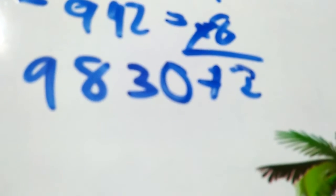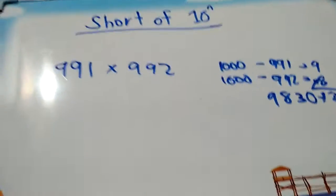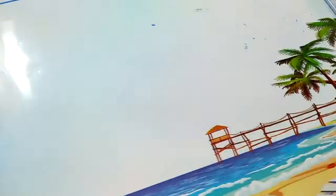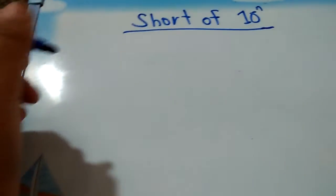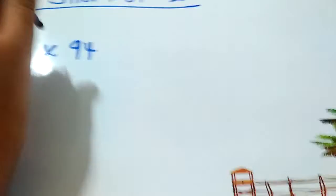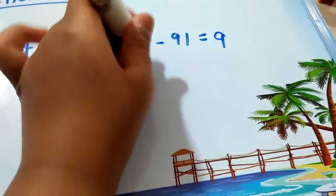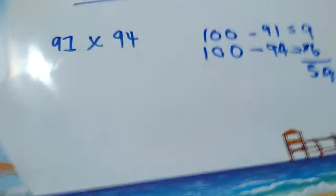How about we do a 2-digit instead of a 3-digit? We need to check 91 times 94. Now we need to do 100 minus 91, that's 9. 100 minus 94 is 6.